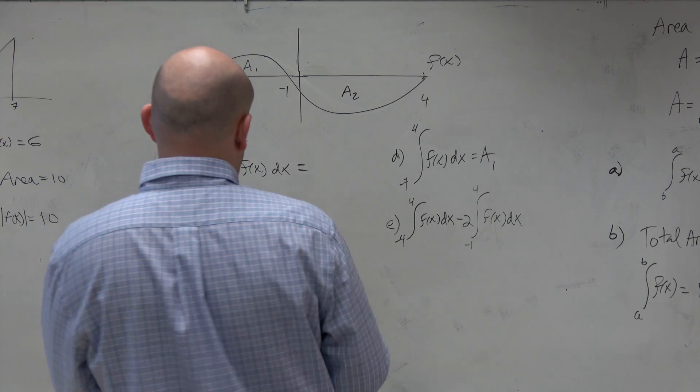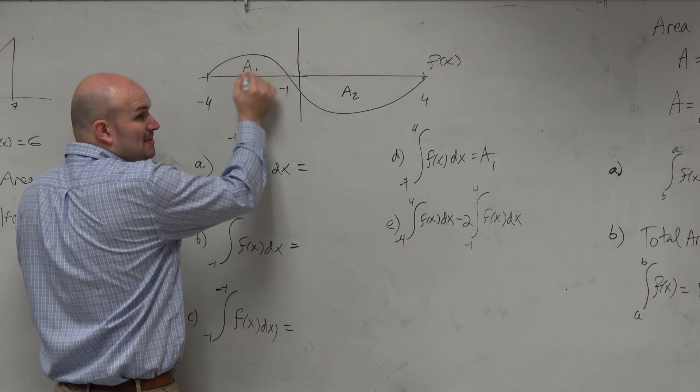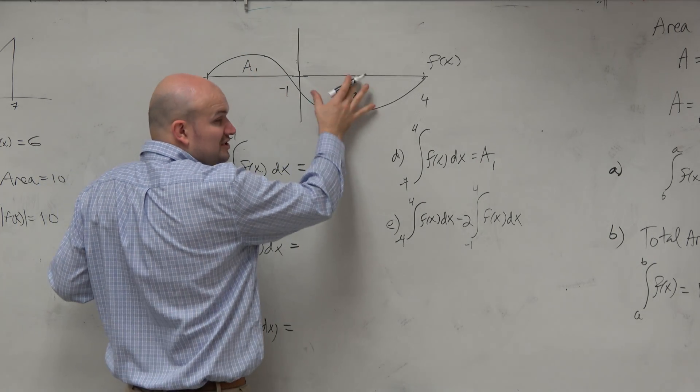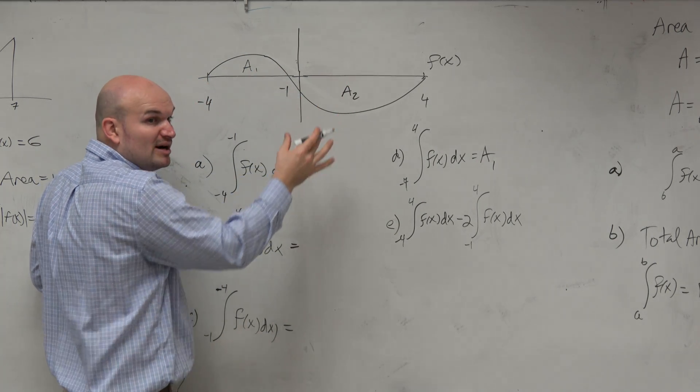What we have to do in this case is, when we're evaluating this, this is a positive value. Let's say the area under this curve is 5.